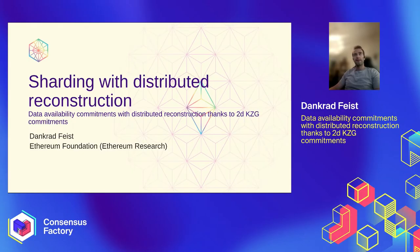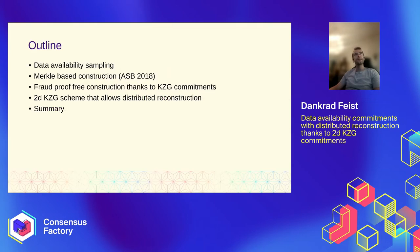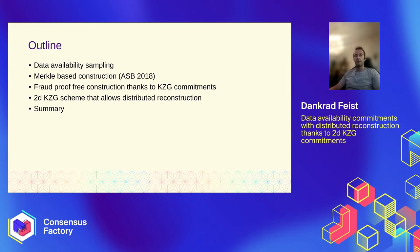I'm going to talk about data availability commitments that allow distributed reconstruction and how we're able to do that using a two-dimensional KZG scheme. As an outline, I will be talking about data availability sampling, how that works, the basic principle, the Merkle-tree-based construction first suggested in 2018, and then how we came across fault-proofing constructions using KZG commitments, and finally how we improved them using a 2D scheme that also allows distributed reconstruction and gets rid of dependencies on super nodes for everything except liveness.